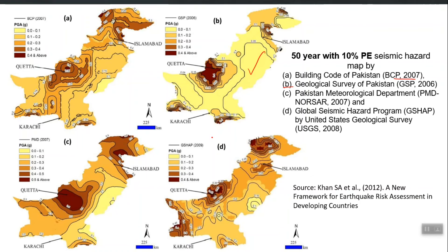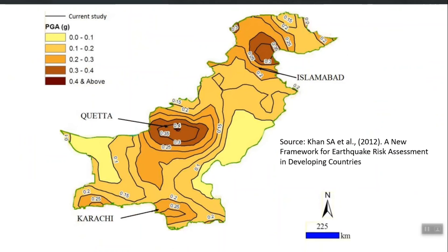It is not a fixed deterministic thing — PSHA is an approximate science of quantifying future earthquakes. Map C is from a PMD study, and the last one is the GSHAP, an international study in which Pakistan was part. So four different studies are shown in one figure, and although the hazard pattern is somehow the same — with a high hazard region in the north and in the Balochistan region — the numbers differ depending on the PSHA methodology used and what input data was used for each study. This fifth study also conducted PSHA and provided a better picture of the hazard.